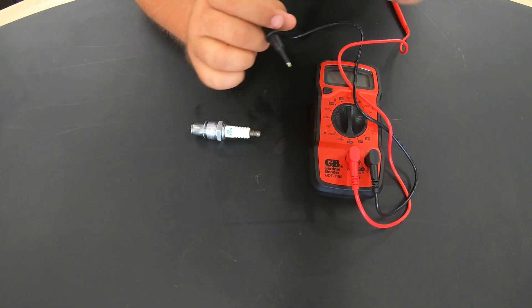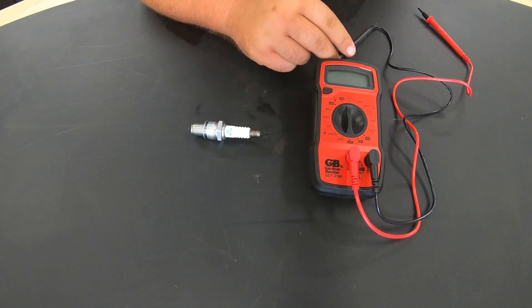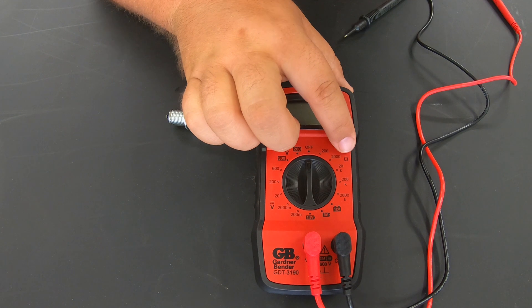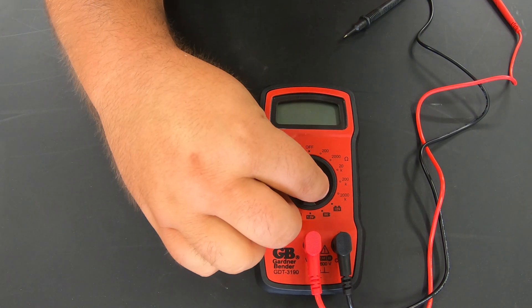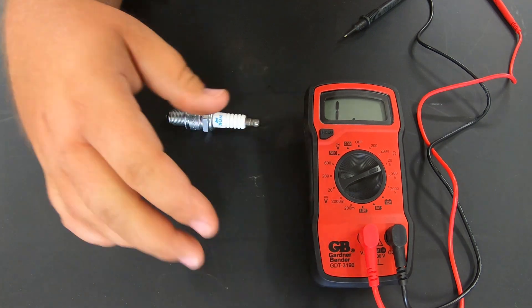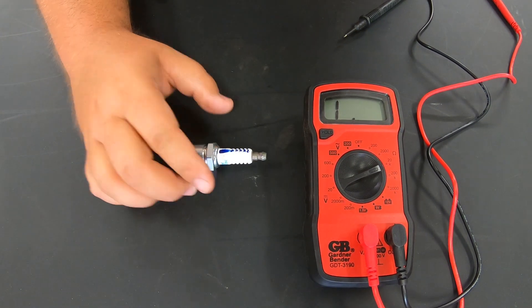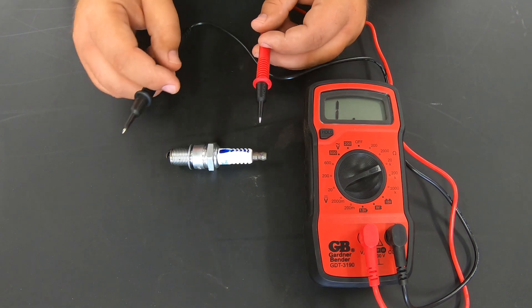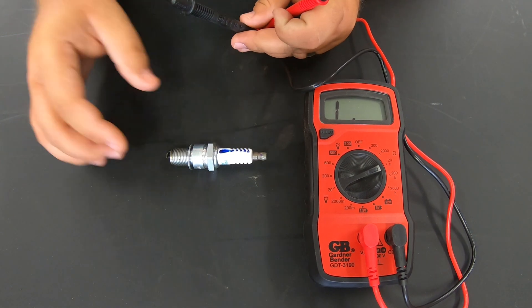So how we are going to test for this is we are going to break out our multimeter, then what we're going to do is set this over here on the 20k ohms setting. So we're going to go ahead and pop that on over right there to the 20k ohms, then what we're going to do is take our two ends of our testers of our multimeter here.